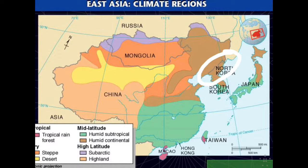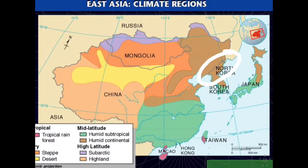Korea is located in a temperate climate zone at a medium latitude. Because of this, it has four distinct seasons. Spring occurs from March to May, summer from June to August, autumn from September to November, and winter from December to February. The long winters bring cold, clear weather with occasional snowstorms due to winds that blow from Siberia.